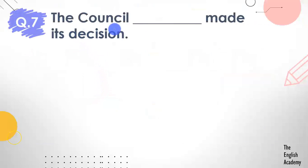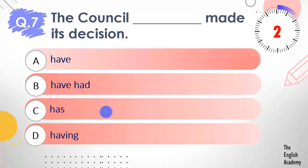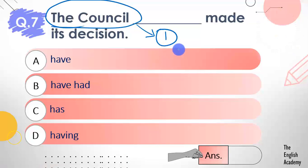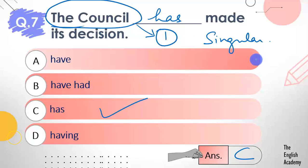Question number 7: The council ___ made its decision. Options: A) have, B) have had, C) has, D) having. This is a very easy question. 'The council' is a collective noun and here it represents one group of people. The answer is option C — has. When a collective noun takes a unanimous decision or unanimous action, we treat it as a singular subject and use a singular verb. When the group members act individually, we use a plural verb.